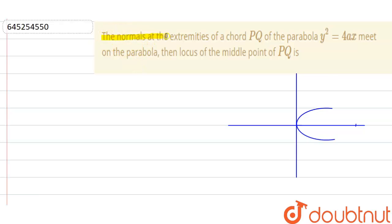Our question is: the normal at a point of a chord PQ of the parabola y² = 4ax meets on the parabola. We need to find the locus of the middle point of PQ. Let's say I am drawing a normal.